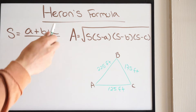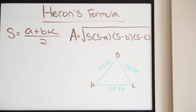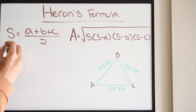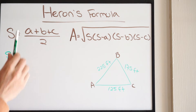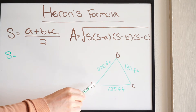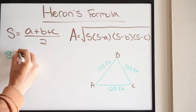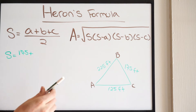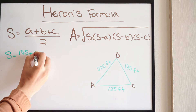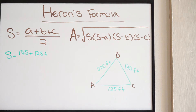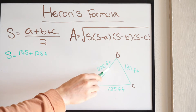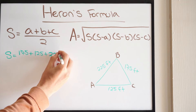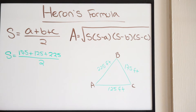Looking at the formula, a, b, and c refer to your side lengths. So let's go ahead and plug this in. s equals a plus b plus c, divided by 2. Side a is opposite to angle a, so that's 175. Side b is going to be 125. And side c, opposite to angle c, will be 225. So we get 175 plus 125 plus 225, divided by 2.